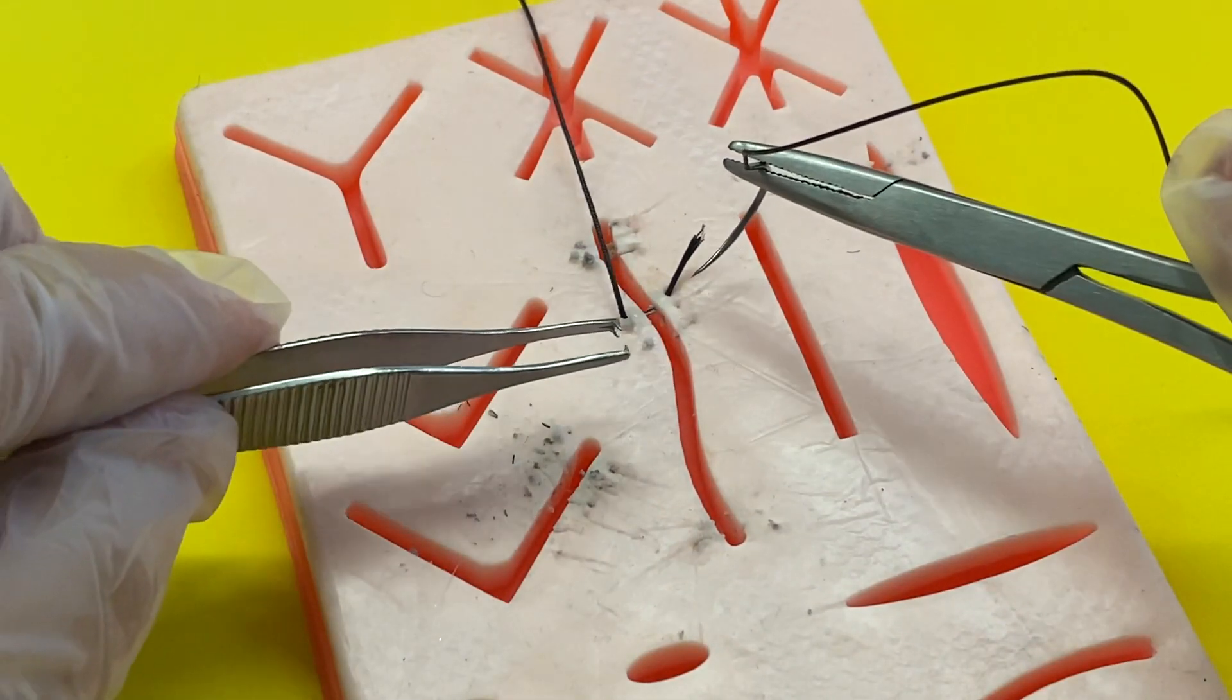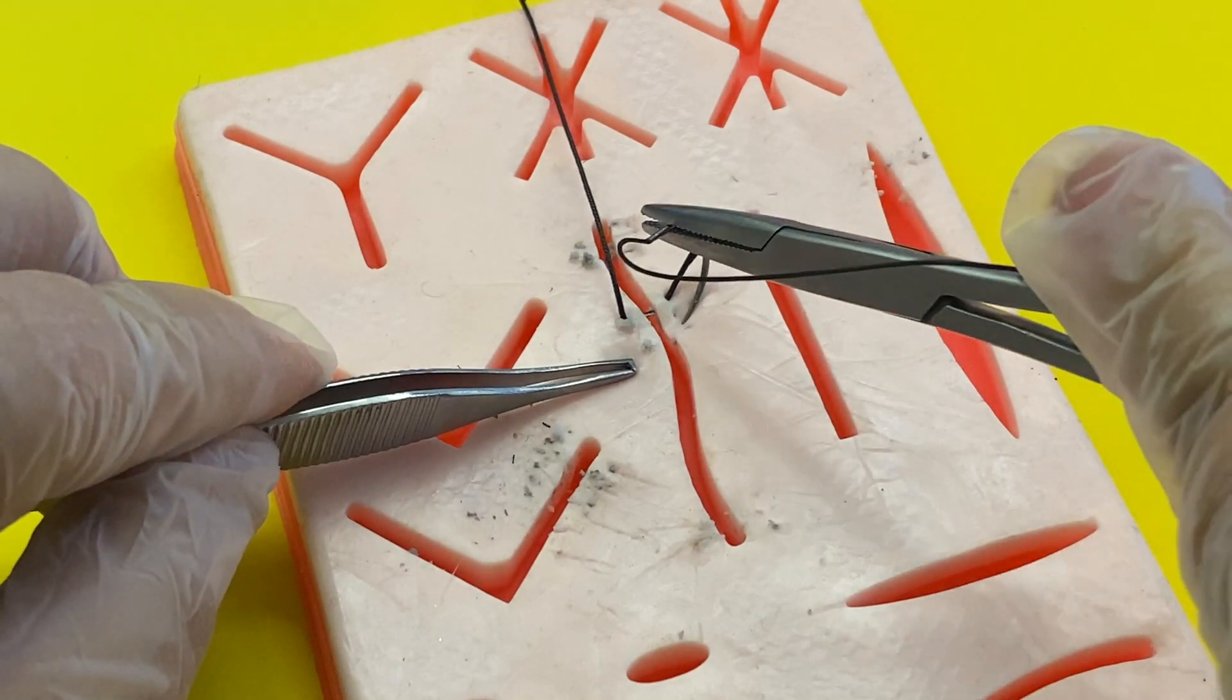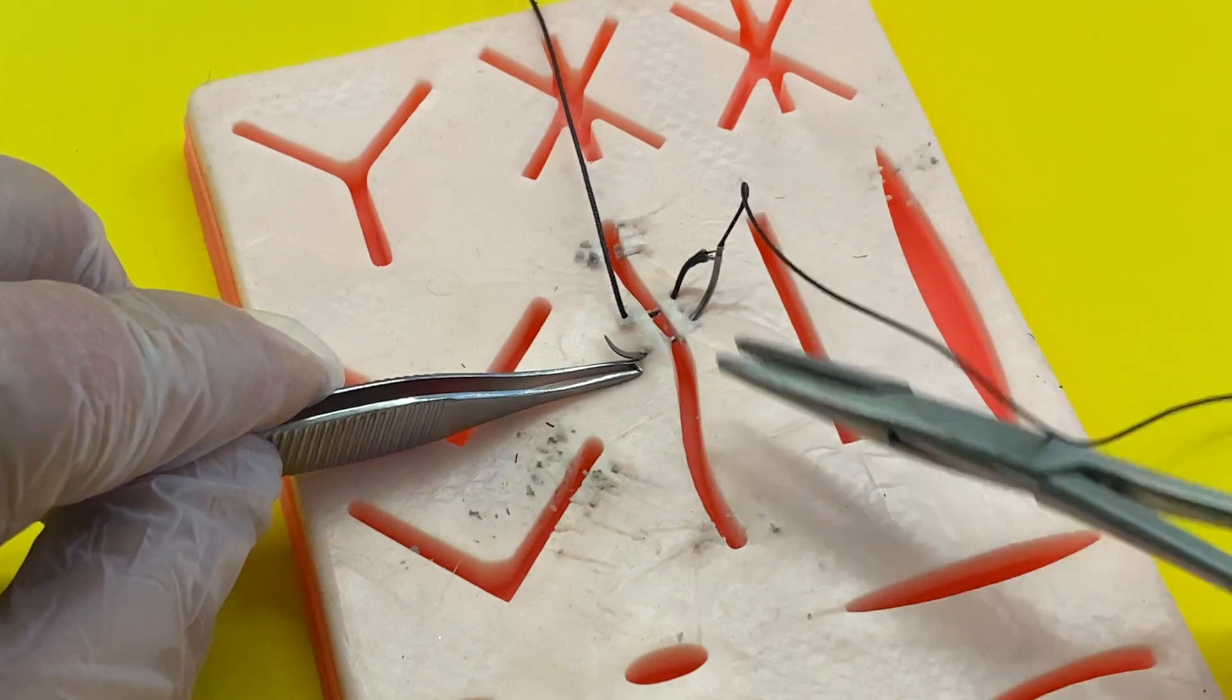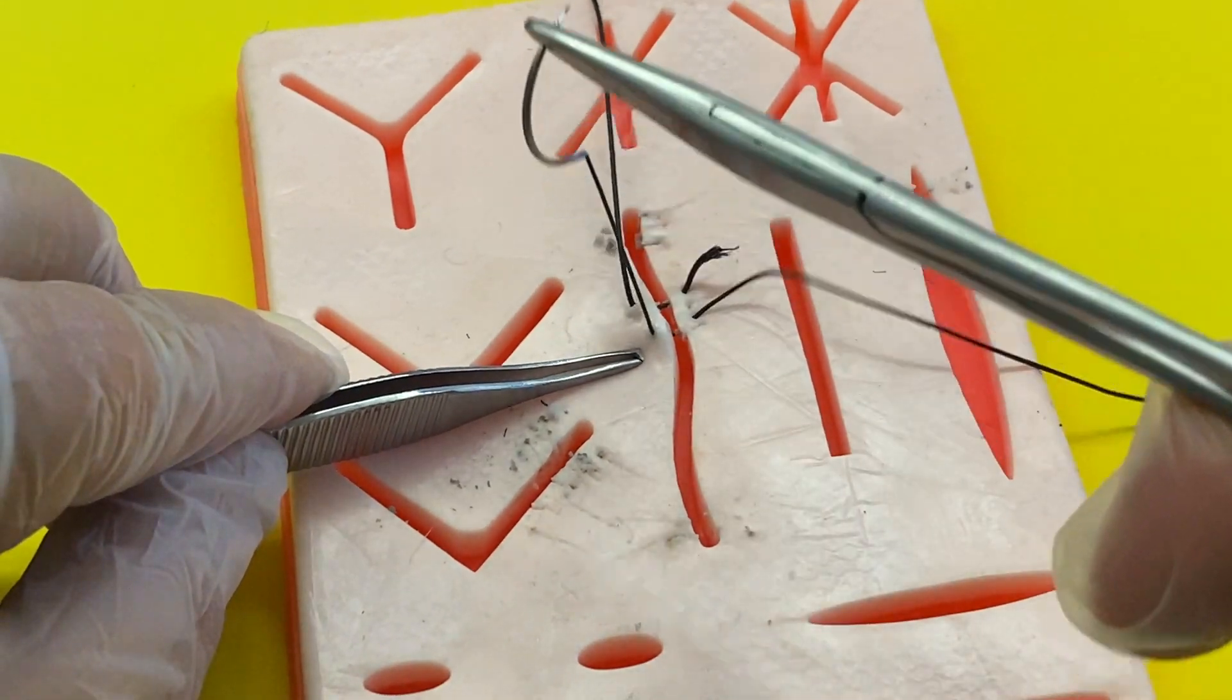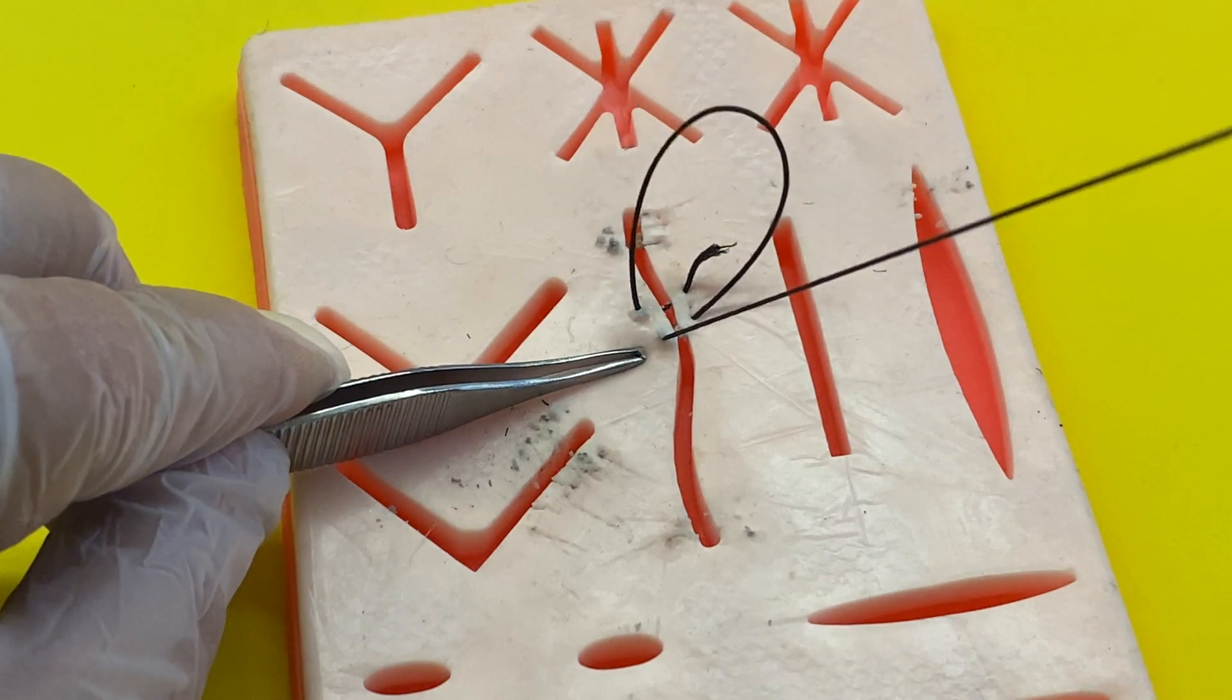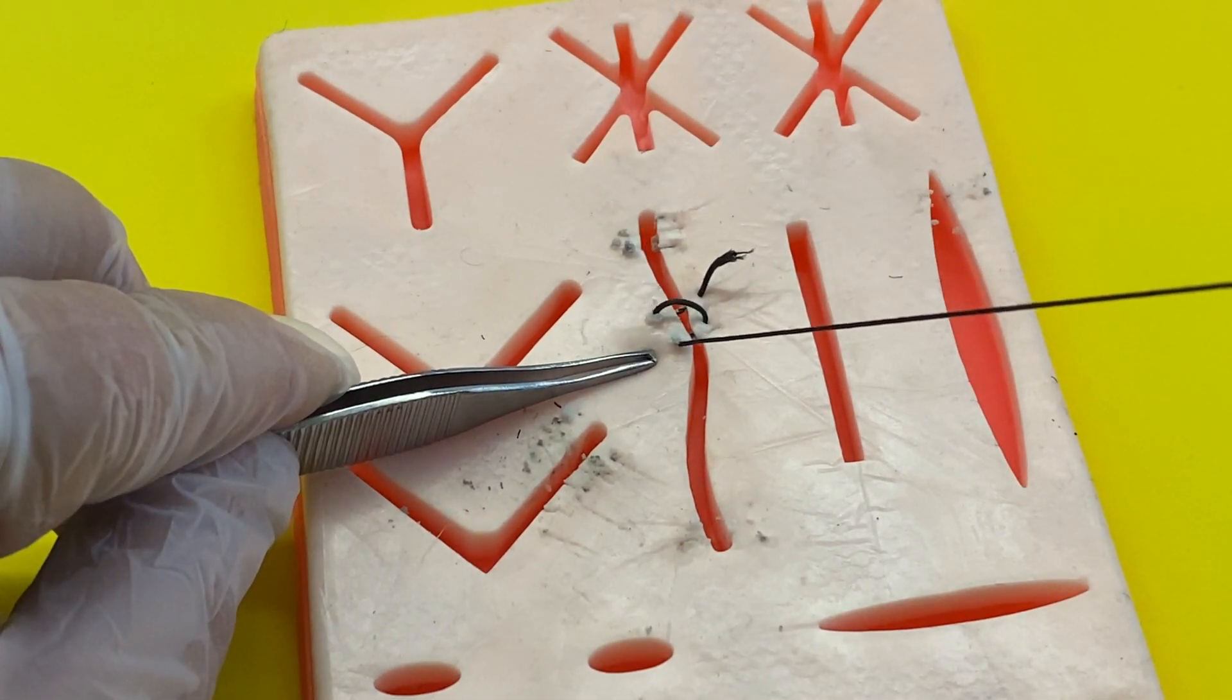And now you're going to do the exact same thing. Put the needle driver through pretty close to the other suture and pull the needle through. Use the needle holder to pull and use the tweezers to keep the skin down.